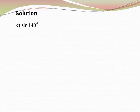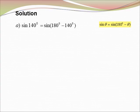A) sin 114°. We know that 114° is in the second quadrant, and sin is positive in the second quadrant. So for the second quadrant, we use the formula (180° − θ). Our theta is 114°, so sin 114° equals sin(180° − 114°) equals sin 66°.